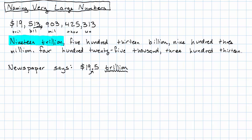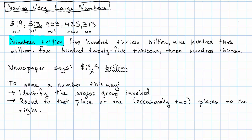This is a very common way of naming large numbers, by rounding them off and then using the name of the largest group involved. So to name a number this way, first we identify the largest group involved. And then, depending on our application, we either round to that place or one place to the right. And then we express our number as a whole or decimal number of trillions or millions or billions.